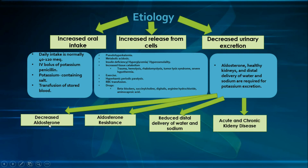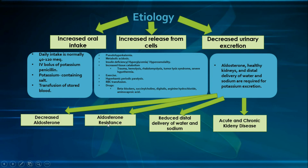For decreased aldosterone, causes include adrenal insufficiency, diabetic nephropathy, or side effects of drugs such as ACE inhibitors, ARBs (angiotensin receptor blockers), NSAIDs (non-steroidal anti-inflammatory drugs), or calcineurin inhibitors. For aldosterone resistance, it is most commonly due to potassium-sparing diuretics such as aldosterone antagonists — spironolactone and eplerenone — or luminal sodium channel blockers in the collecting tubules — amiloride and triamterene. Aldosterone resistance could also be due to acute and chronic kidney disease itself.